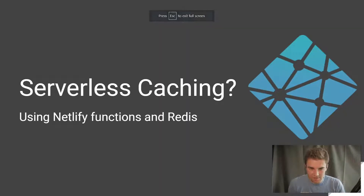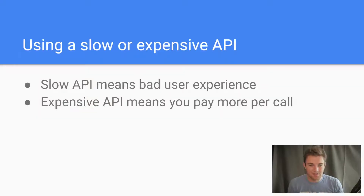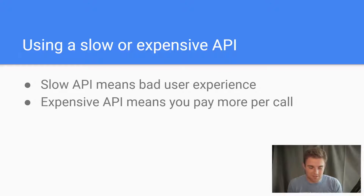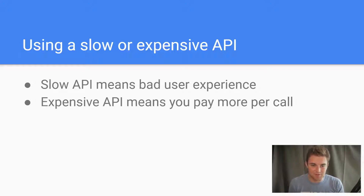Serverless caching using Netlify functions and Redis. Why cache? If you have a slower and expensive API, you want to minimize your expenses and also minimize the time it takes for users to get the data from the API. Minimizing time to get the data means you'll have a better user experience, and if you minimize costs, obviously you won't have to pay as much to keep your services up and running.